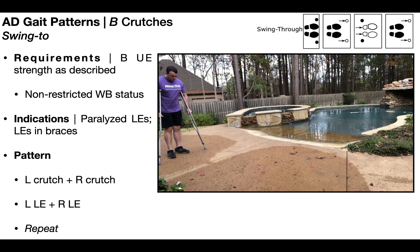In both the swing-to and swing-through gait patterns, there are two major requirements. Number one is that they have sufficient bilateral upper extremity strength, as described in the previous video — go back and see that, where we also cover other common gait patterns with bilateral assisted devices. The other requirement is that they have a non-restricted weight-bearing status — so they're full weight-bearing on both lower extremities with no orthopedic injuries.